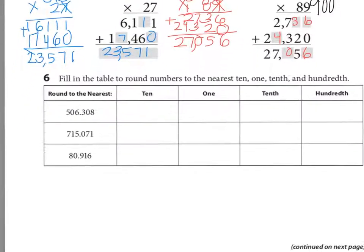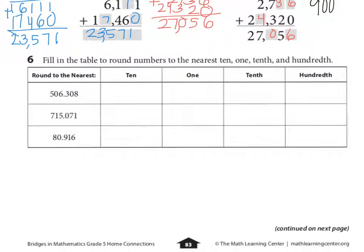Number 6. Fill in the table to round numbers to the nearest 10, 1, 10th, and 100th. So we're rounding to the nearest 10. The nearest 10 is right here. We're going to look to the right, we see a 6, and so my number is going to be 510. Looking now to the ones place, I look to the right, I see a 3. So my number is going to be 506 rounded to the nearest 1.